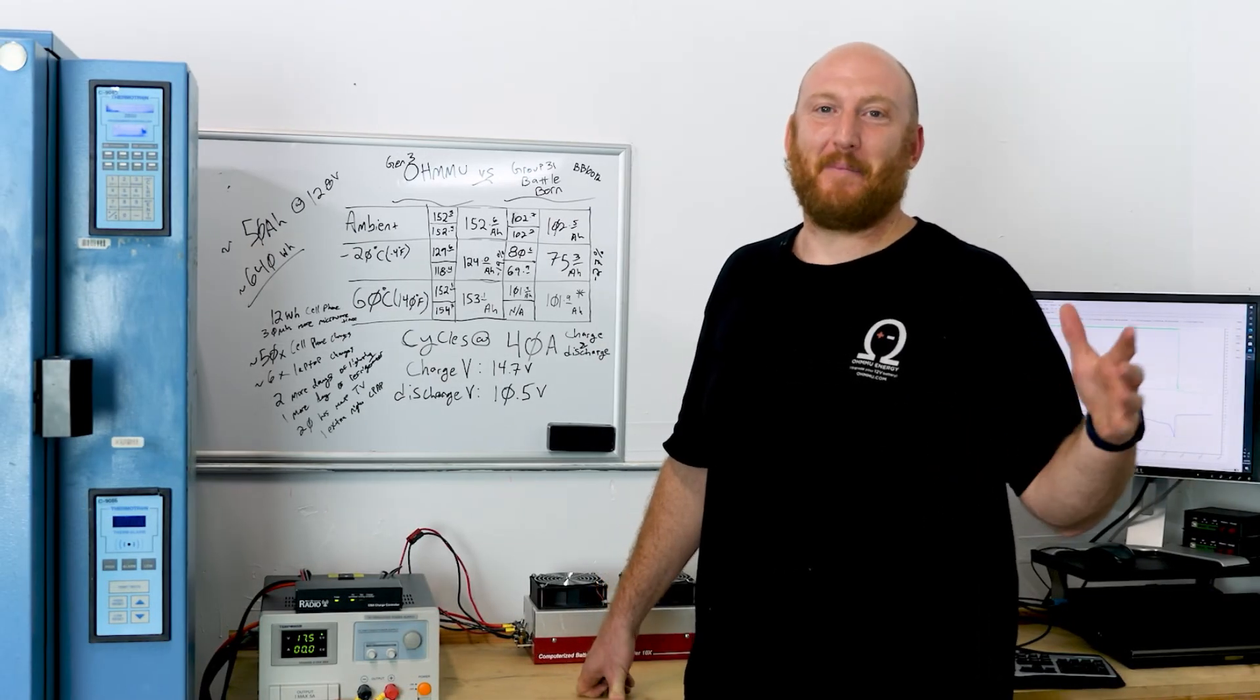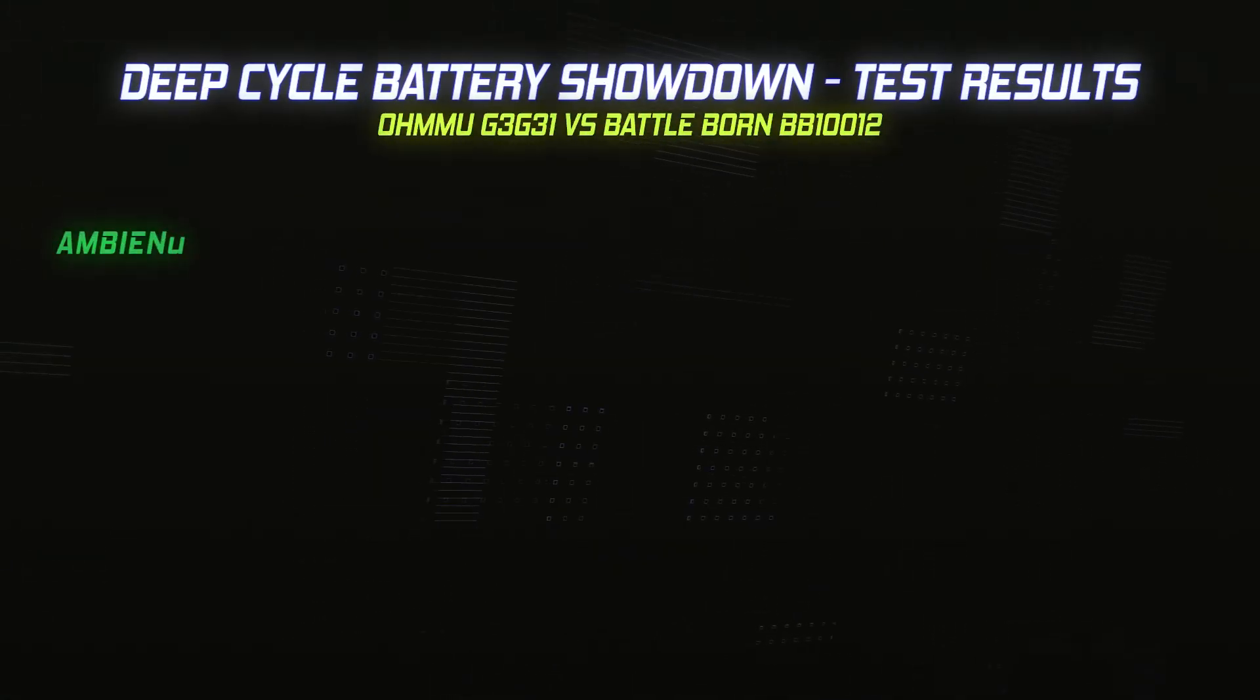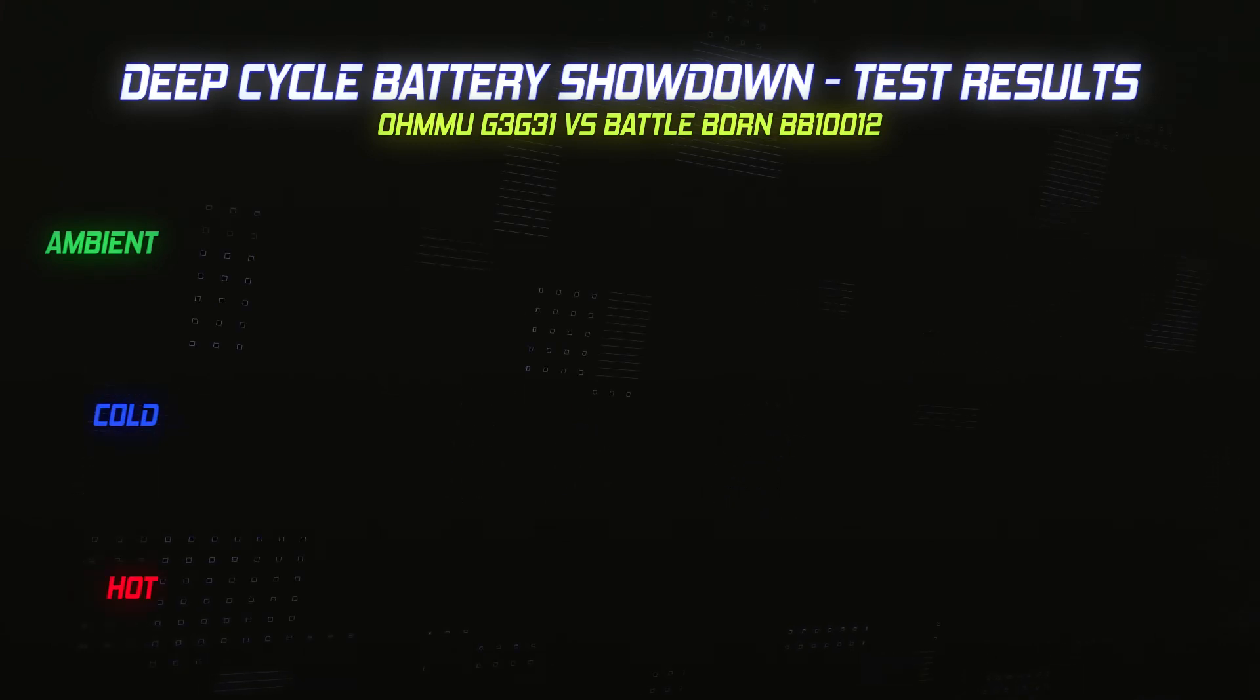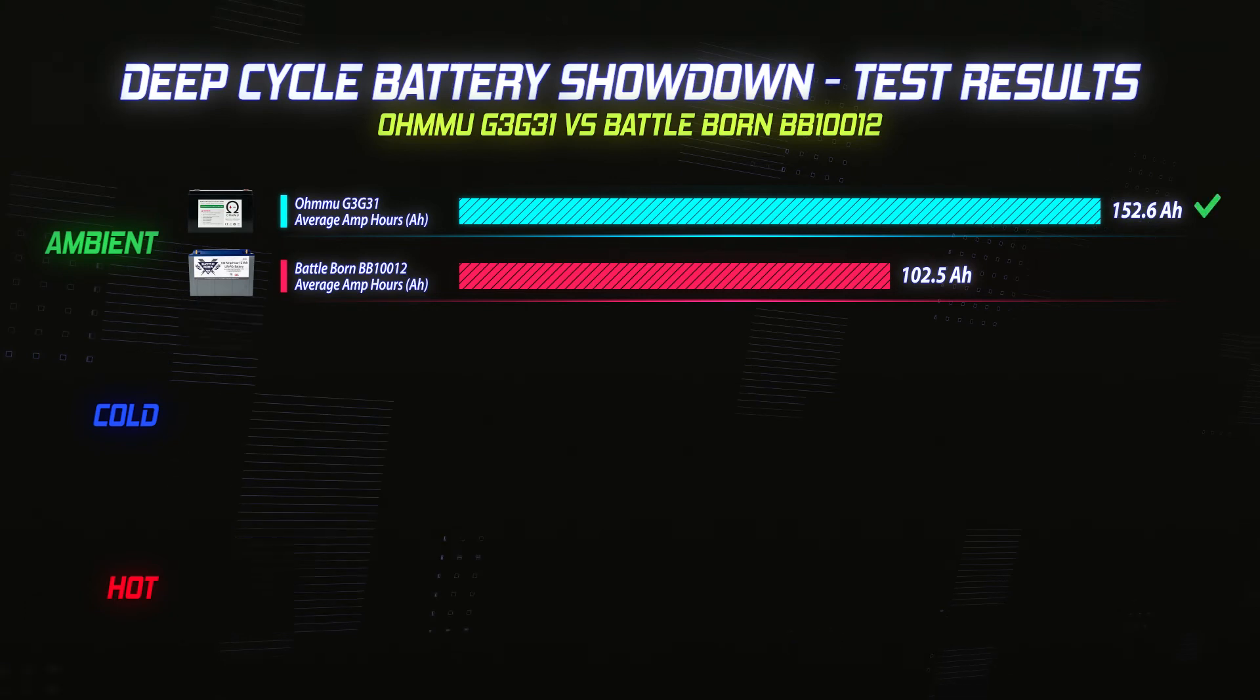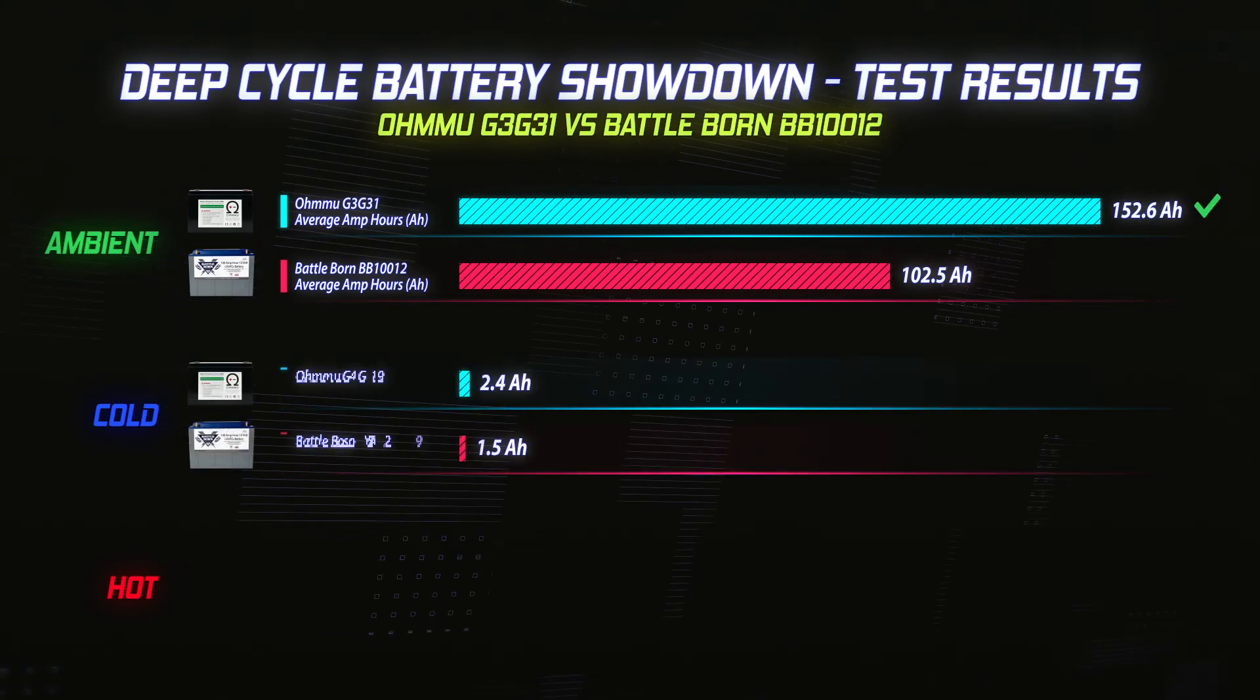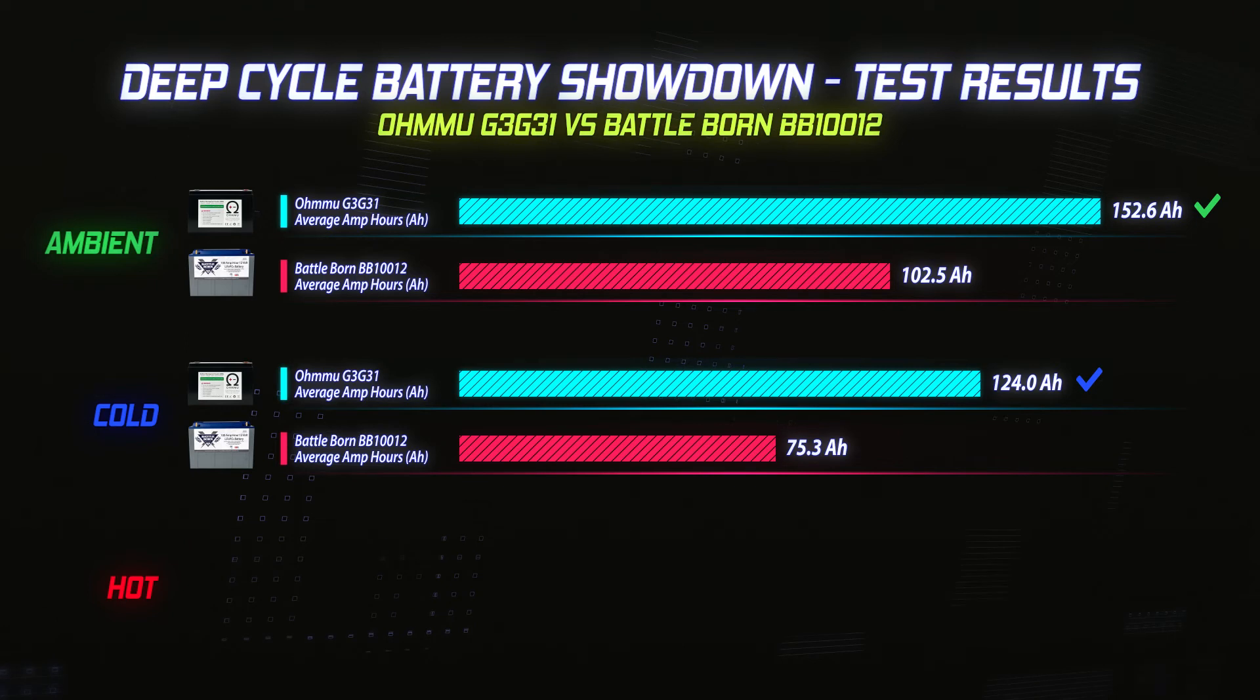To sum it all up with test data, we did the three different tests: ambient, cold, hot. At ambient, 152 versus 102, Omu got 152 amp hours, Battleborn at 102. In the cold, Omu was at 124 amp hours, whereas Battleborn dropped down to 75 amp hours. The difference in those from ambient to cold, Battleborn lost about 27% of its capacity in the cold testing. And the Omu battery lost about 19% of its capacity in the cold testing.